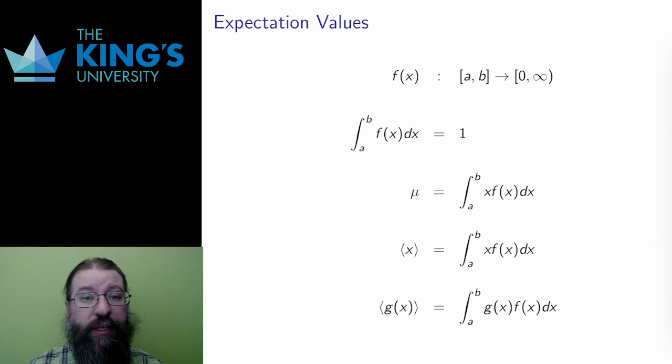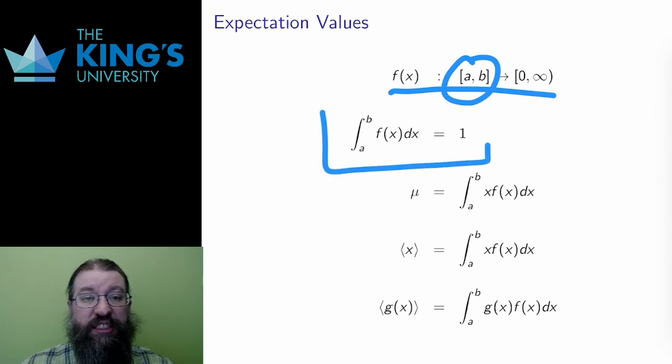So far, for continuous probability, I've defined the probability density function, which is a positive function on the interval a to b, where the values in the interval are the possible measurements. The integral of the function has to be 1, because the total probability of all measurements must be 1.